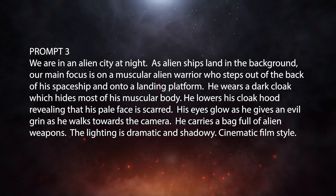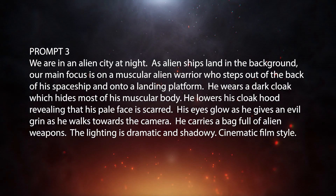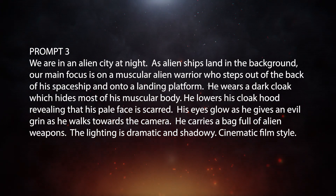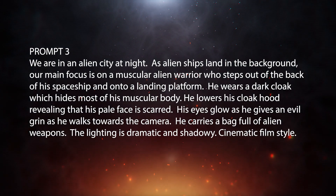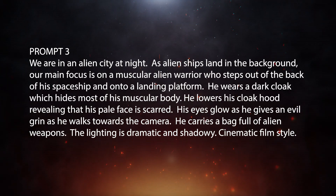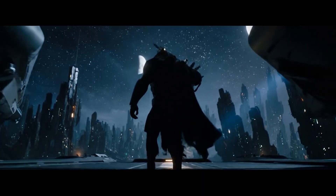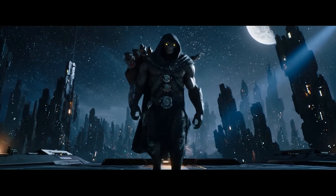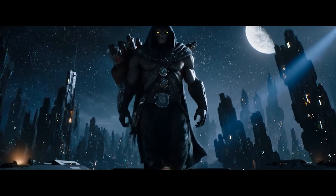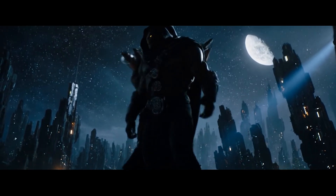Prompt 3: We are in an alien city at night as alien ships land in the background. Our main focus is on a muscular alien warrior who steps out of the back of his spaceship and onto a landing platform. He wears a dark cloak which hides most of his muscular body. He lowers his cloak hood, revealing that his pale face is scarred — his eyes glow as he gives an evil grin. As he walks towards the camera, he carries a bag full of alien weapons. Cinematic film style. I like how the alien turned out. I feel like VO3 ignored my idea of having him come out of the back of a spaceship and some of my other little details, but luckily I don't need that long of a shot.